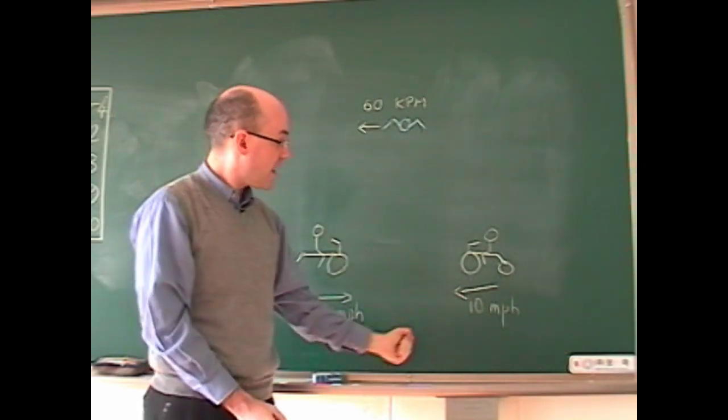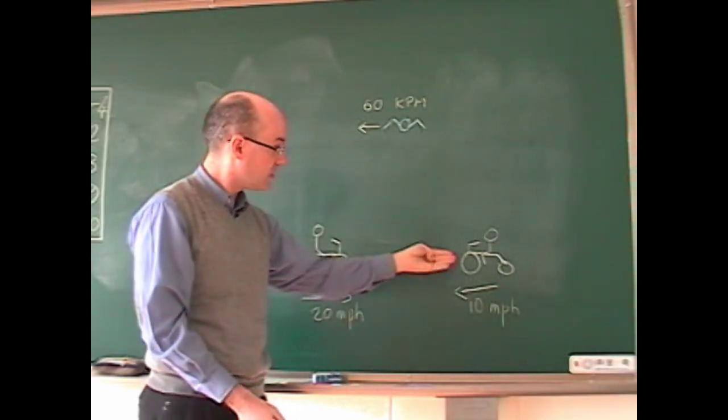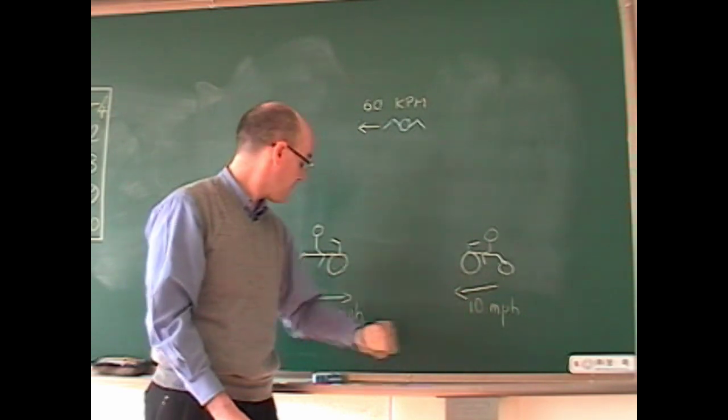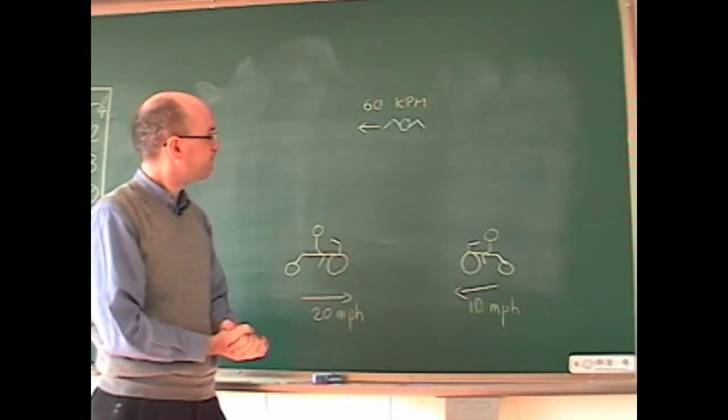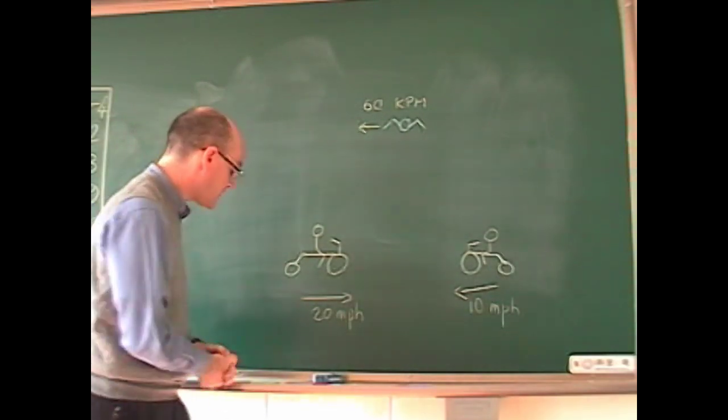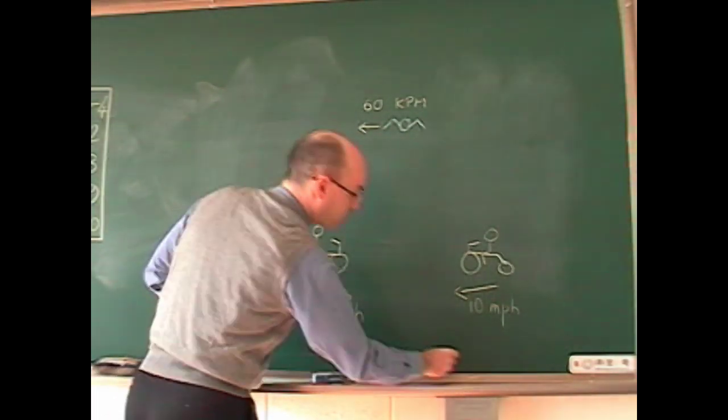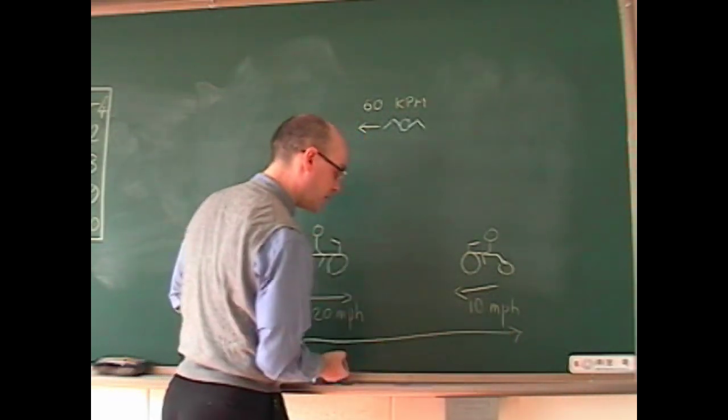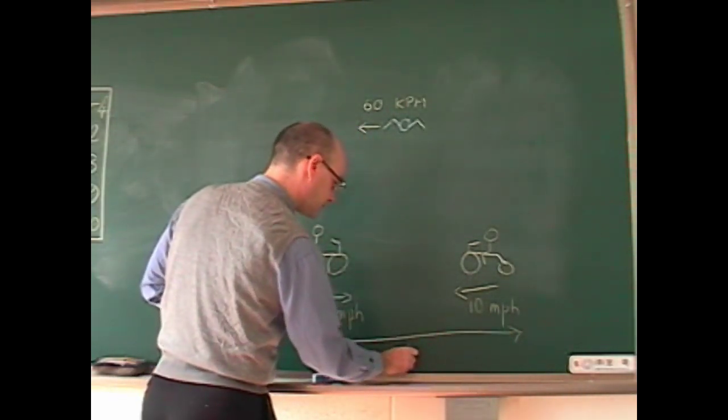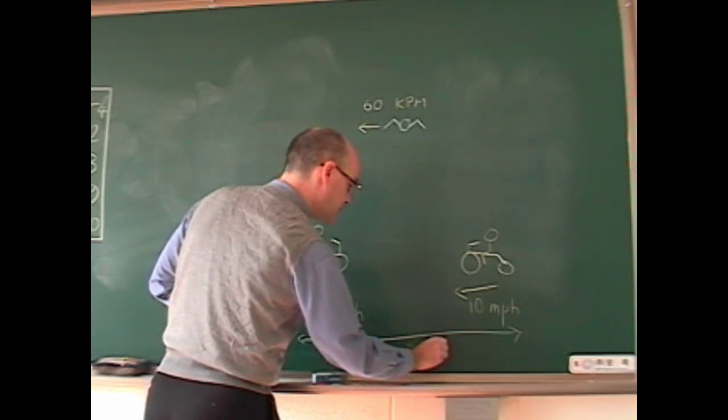And both bikes are at different speeds: one is 10 miles per hour, this one is 20 miles per hour. And the distance at the beginning between them is 90 miles.